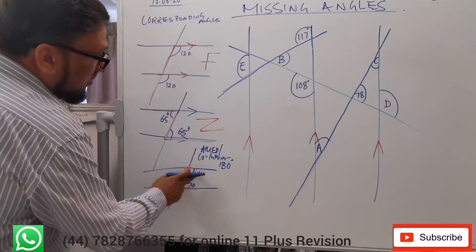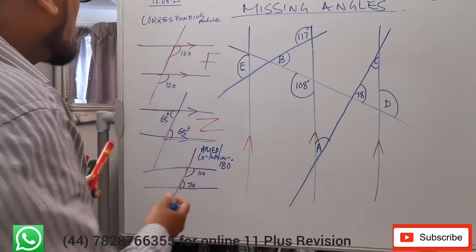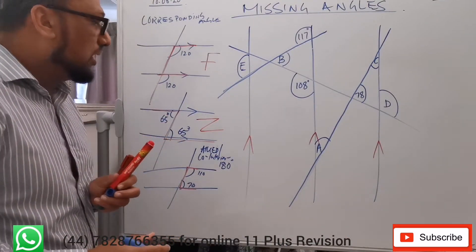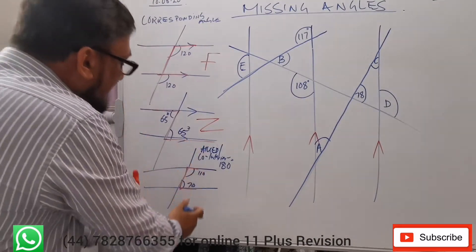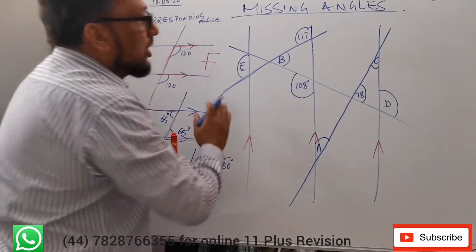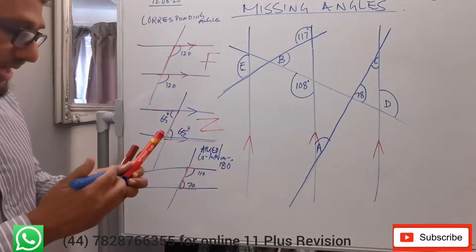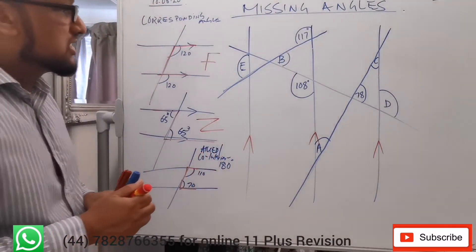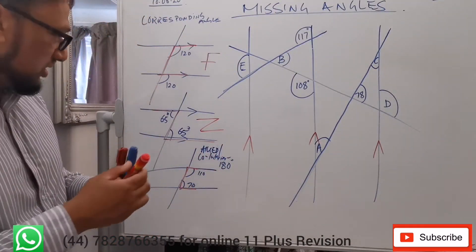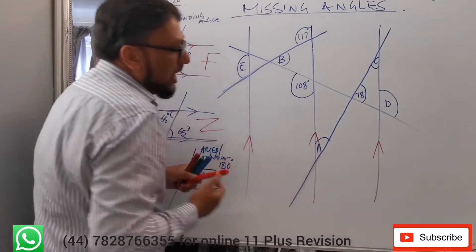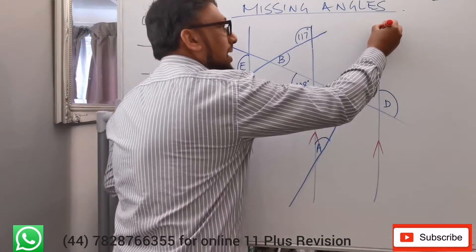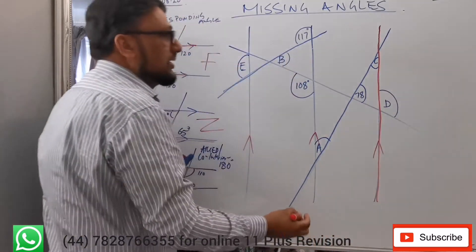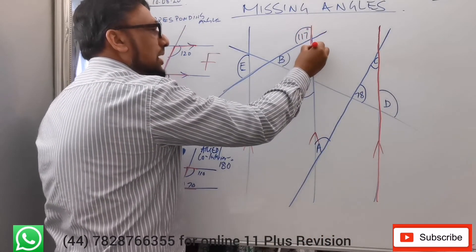So those are the three types of angles in parallel lines, which we already discussed in a previous video. On the basis of these concepts we can solve this question. Don't be confused — I'm using the red marker just to overwrite each line. We'll go through one by one. This here is a parallel line.